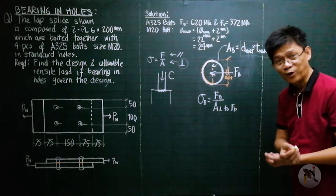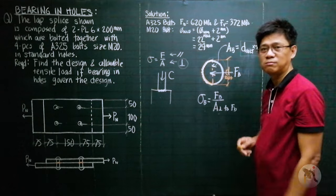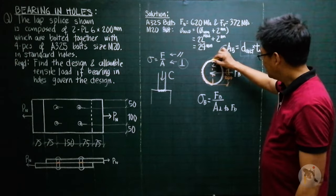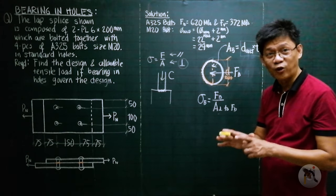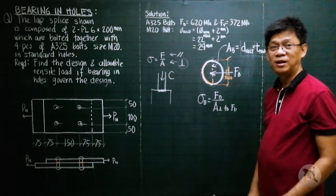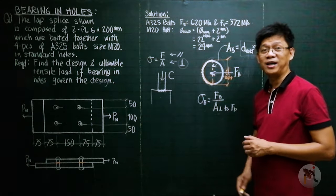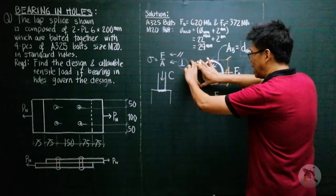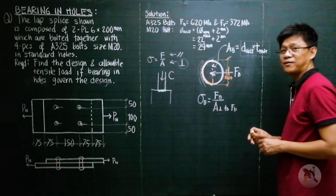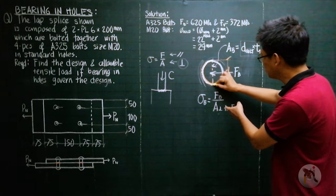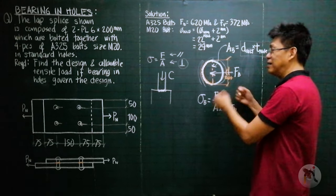Now take note: we have a plate and a bolt, and we want to ensure that the contact surface between the bolt and the plate will not be excessively deformed, because if it is excessively deformed there will be failure in integrity — the shape of the structure will be compromised.